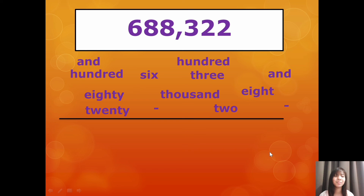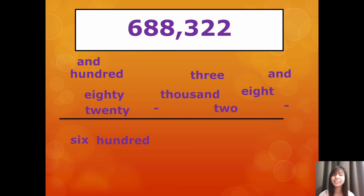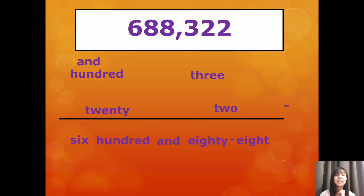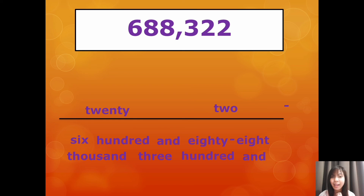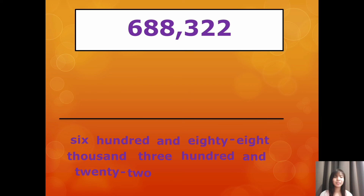So, let's get started. What do you think the first word is? Six, hundred, and, eighty — dash — eight, thousand, three, hundred, and, twenty — dash — two. Let's read: six hundred and eighty-eight thousand, three hundred and twenty-two.